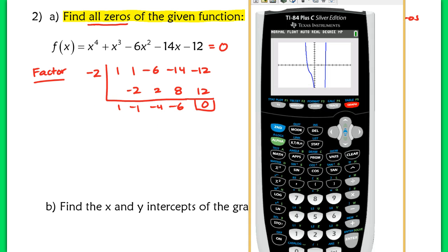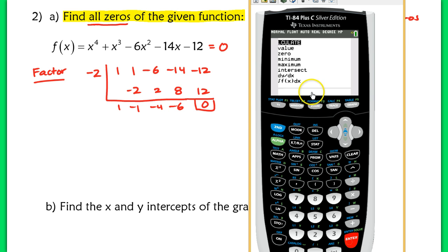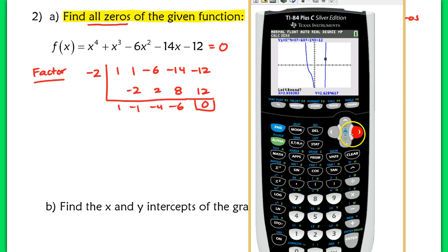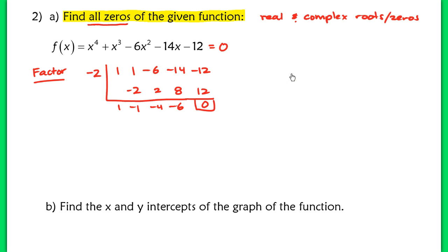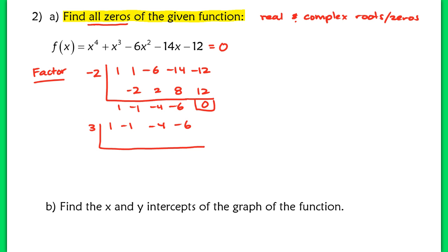I'm going to go back to the calculator and find that other zero. I'll hit 2nd calc, zero, and it looks like it's at x equals 3 — let's go ahead and verify. Left bound down here, right bound, and enter. Yep, it's at 3. So we're going to take 3 and place the coefficients 1, negative 1, negative 4, and negative 6, and do synthetic division one more time. Now we have another zero, x equals 3, because we have another remainder of 0.